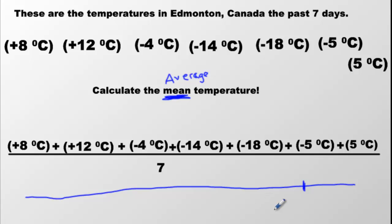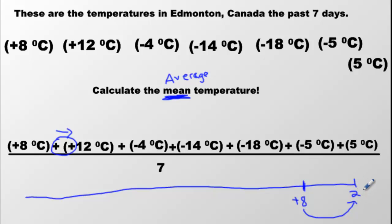We are going to start at positive eight. Then remember the trick? We've got to look at these symbols. If you want to refresh, go back to that video on adding and subtracting integers. If the symbols are the same, you go to the right. The symbols are the same, so you go to the right 12 times — you land at 20. That's just eight plus twelve equals twenty. Then I look at the next two symbols: they're different, so go to the left four spots and you land at 16. That's 20 minus four equals sixteen.